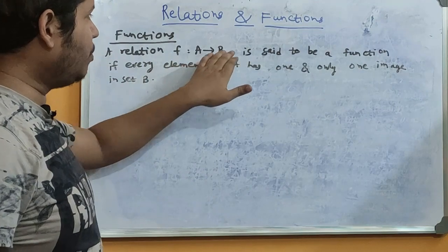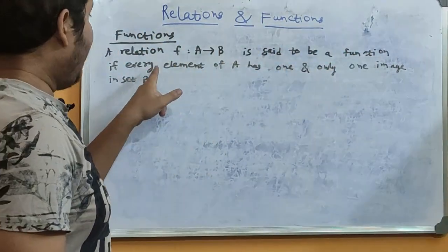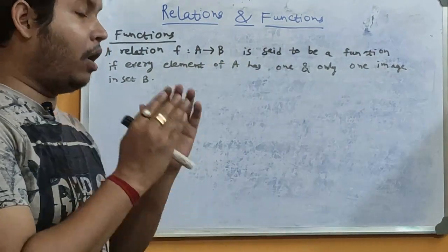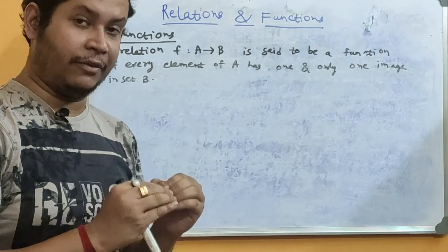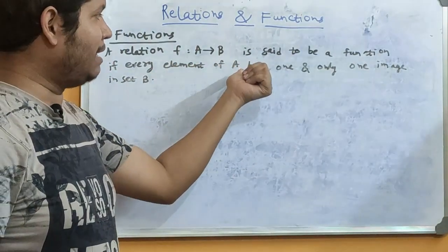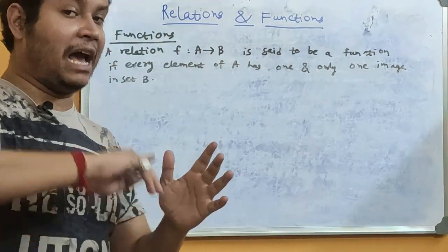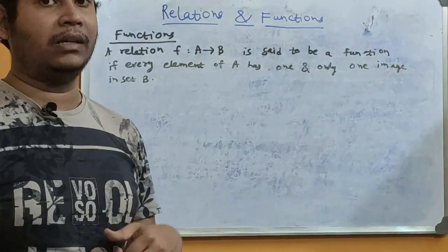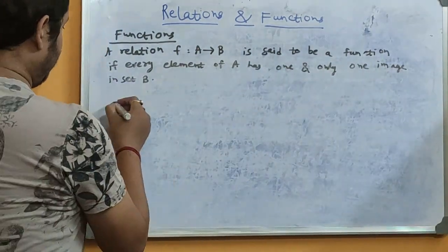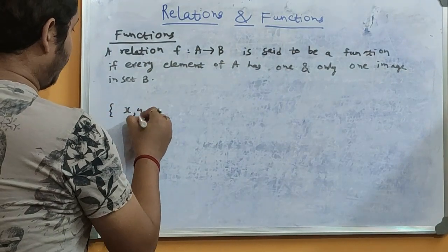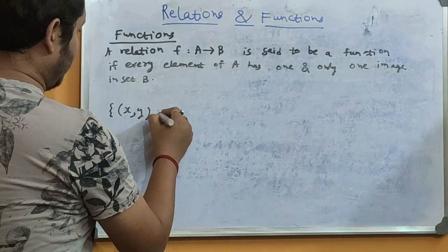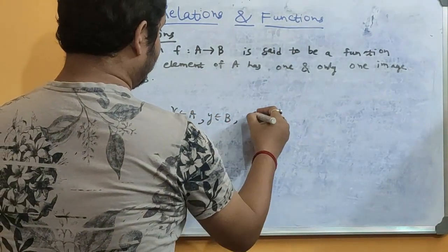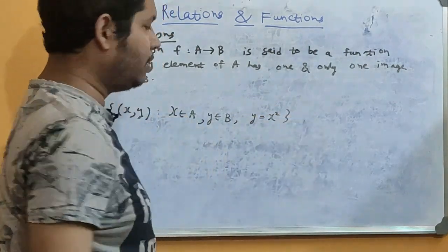A relation from A to B is said to be a function if every element of A has one and only one image in the set B. So only those relations we are going to call functions where for each and every element of set A there is an image, and not just any image — there needs to be only one image. Let us see an example. We are considering ordered pairs (x, y) such that x belongs to A and y belongs to B.